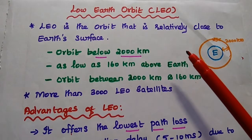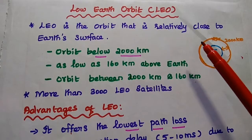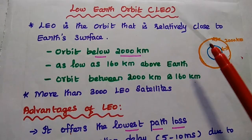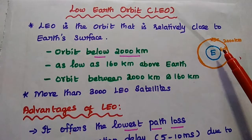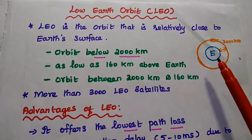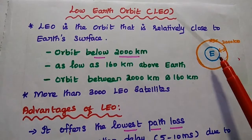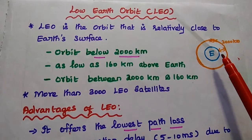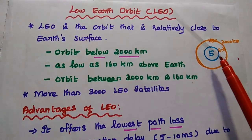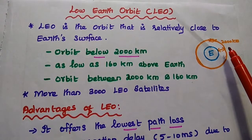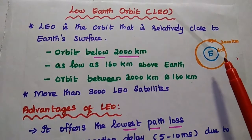Dear students, now we are going to discuss low earth orbit in mobile satellite services. LEO is the orbit that is relatively close to the earth's surface. This orbit is below 2000 km, as low as 160 km above the earth's surface. So simply we can say this orbit is between 2000 km and 160 km above the earth's surface.